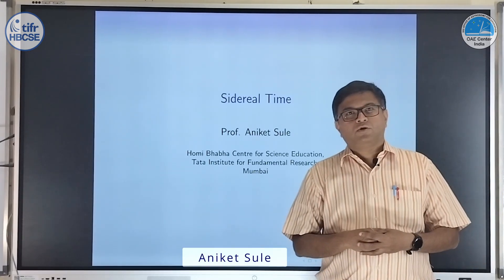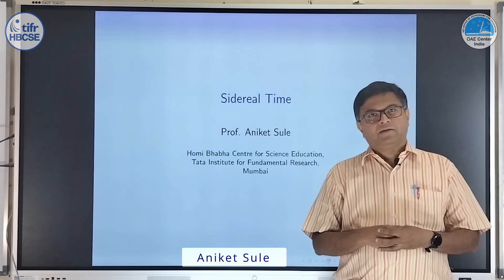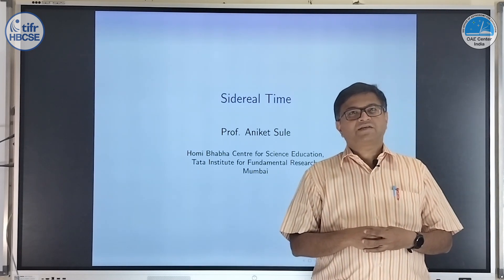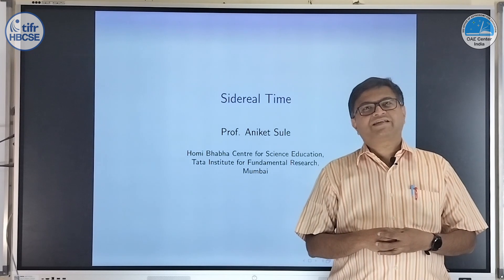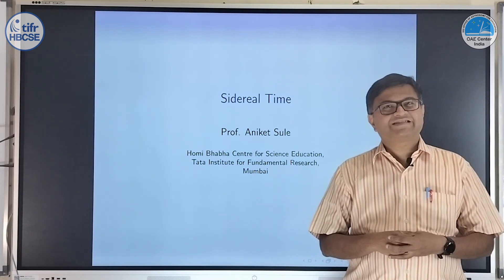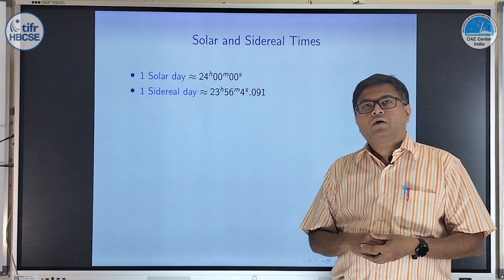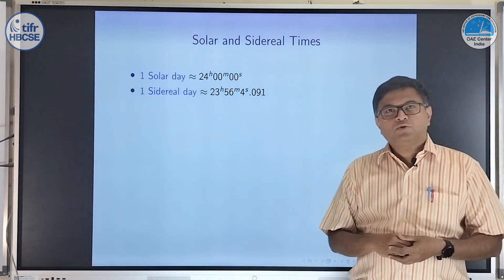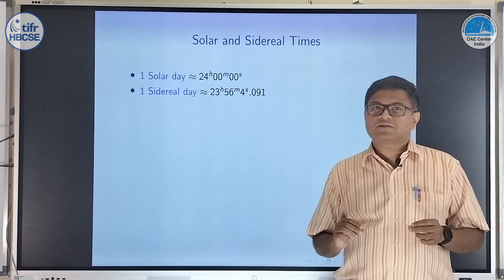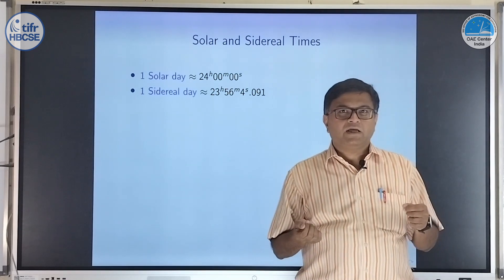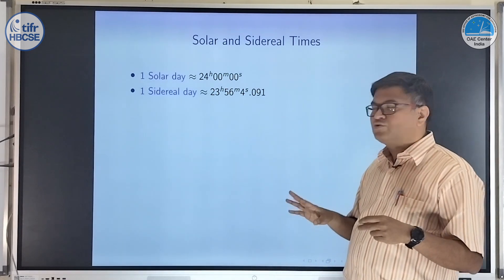In our previous video, we saw what is a solar day and a sidereal day. Today we are going to discuss sidereal time types. Just to recall: one solar day is exactly 24 hours, and one sidereal day is 23 hours 56 minutes 4 seconds.